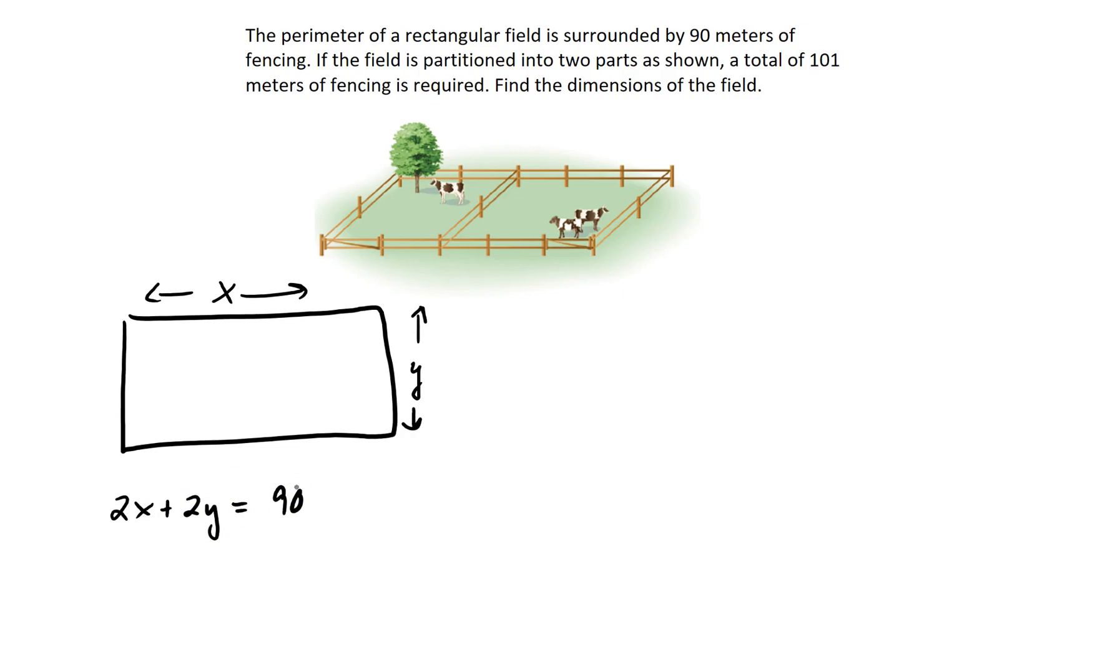Now, the second part says that the field is partitioned into two parts, as shown in the diagram. So if we put in that extra partition in the middle, now the field looks like this.